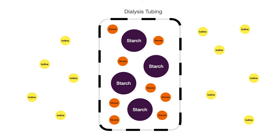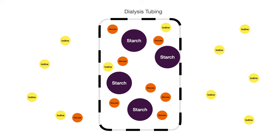So starch is a large molecule. Glucose and iodine are going to be smaller molecules, and they fit through those openings or pores of that membrane or that bag. So it is considered semi-permeable. So that is the dialysis tubing experiment.